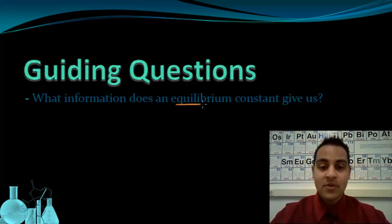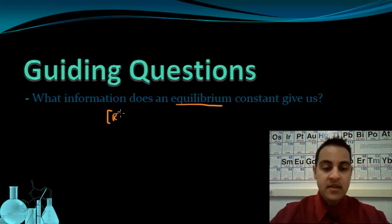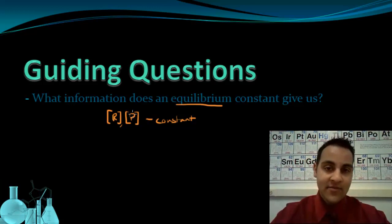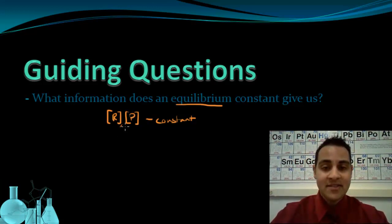We know that when a reaction is at equilibrium, a couple things are true. The concentration of products and reactants are constant. And what's more interesting is that no matter what those initial concentrations are in the reaction, at equilibrium there's always going to be the same relative amount of reactant and product. That idea came up in the 19th century based on experimental evidence.